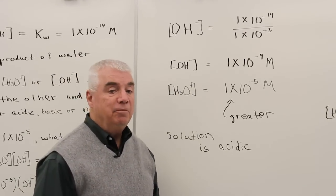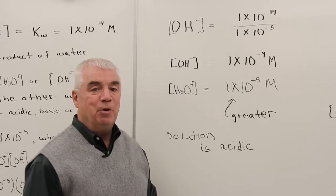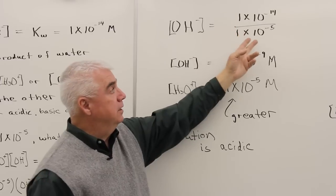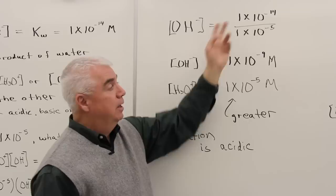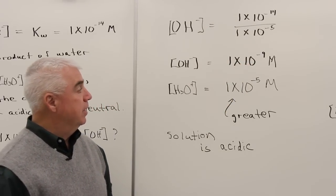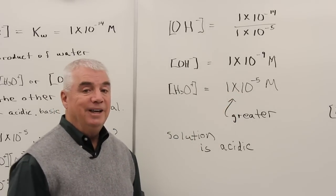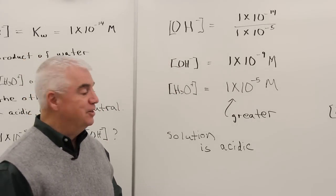Or another way of doing that is to simply take the denominator. Whenever you cross that line, the exponent changes sign, and you'd simply add. So a minus 5 as it goes up becomes a plus 5, plus 5 and a minus 14 is a minus 9. And the H3O+ concentration that we started with was 1 times 10 to the minus 5. So we've solved for both of these.